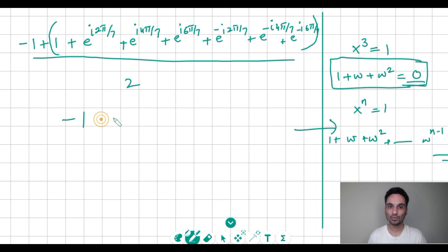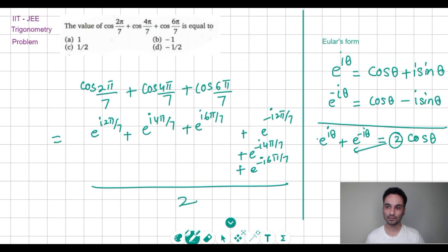So what do we get? (-1 + 0)/2, or we get -1/2. And if we look at the options, that's option D. I hope this video helped you, thank you.